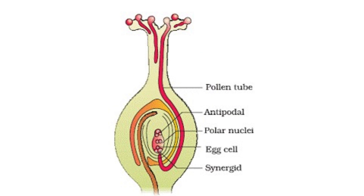Two: fertilization — a pollen grain germinates, forming a tube that grows down the style, reaching the ovule. Three: double fertilization, unique to flowering plants. A) One sperm fertilizes the egg cell, forming the embryo — the future plant. B) The other sperm fuses with other cells, forming the endosperm, a nutrient source for the embryo.